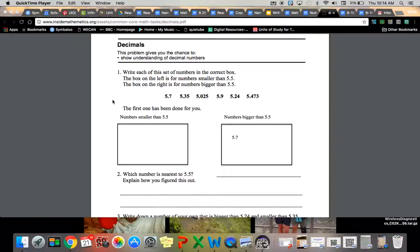Write each of this set of numbers in the correct box. The box on the left is for numbers smaller than 5 1/2. The numbers on the right are for numbers bigger than 5 5/10. Use these numbers to decide which box they go in.